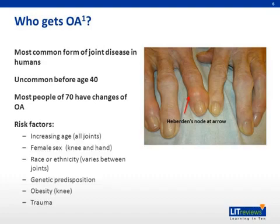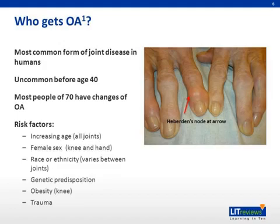The risk factors that make osteoarthritis more likely and worsen the symptoms are: number one, increasing age in all joints; female sex, particularly knees and hands; race or ethnicity, which varies between joints; genetic predisposition; obesity, primarily affecting the knee; and trauma.